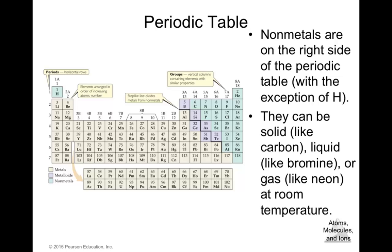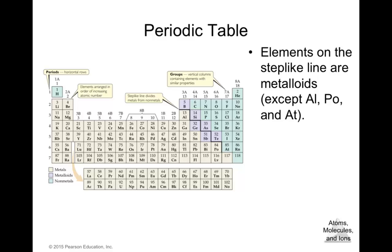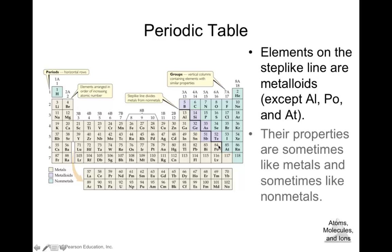Non-metals can be solid (like carbon), liquid (like bromine), or gas (like neon) at room temperature. The third category is metalloids, found along a step-like diagonal line on the periodic table. These six elements have properties sometimes like metals and sometimes like non-metals. So the periodic table allows us to identify metals, non-metals, and metalloids.